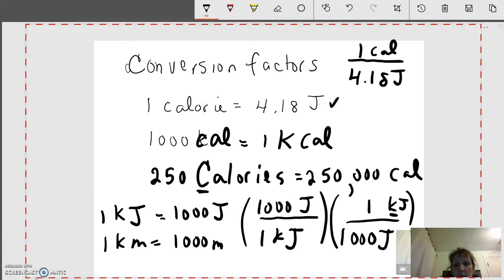Again, this conversion factor is used when you're starting with joules. I'm always looking at the denominator. Now, if you're starting with little calories, we are going to reverse it. We'll put 4.18 joules in the numerator and little calories in the denominator. And this is a conversion factor you need to know.